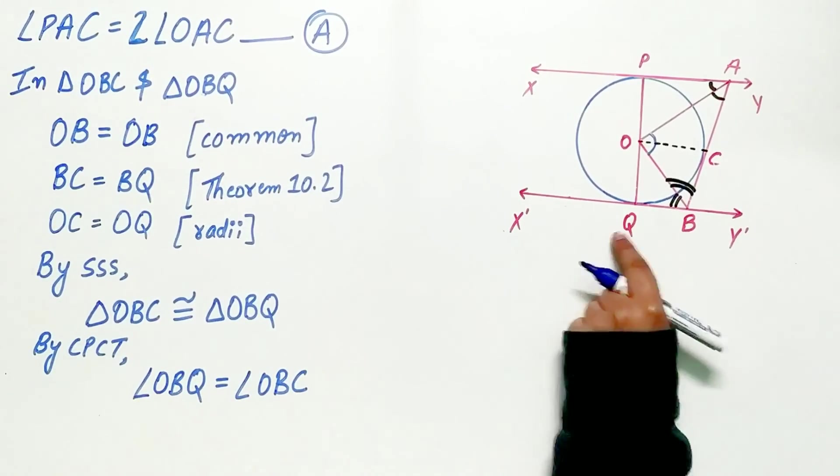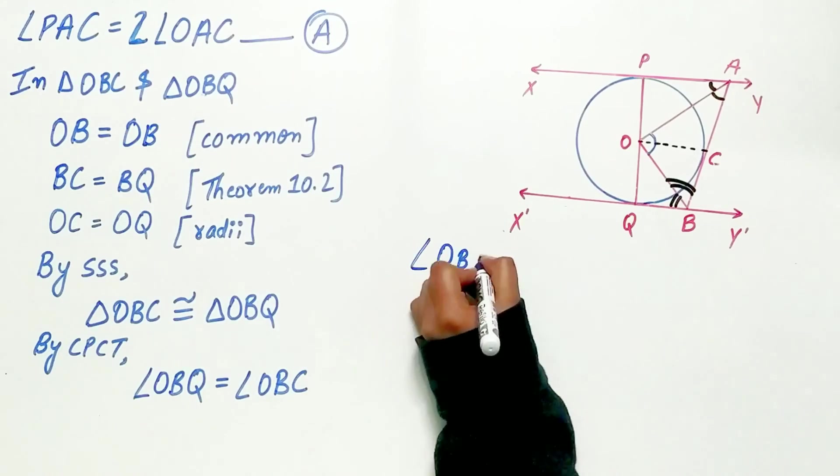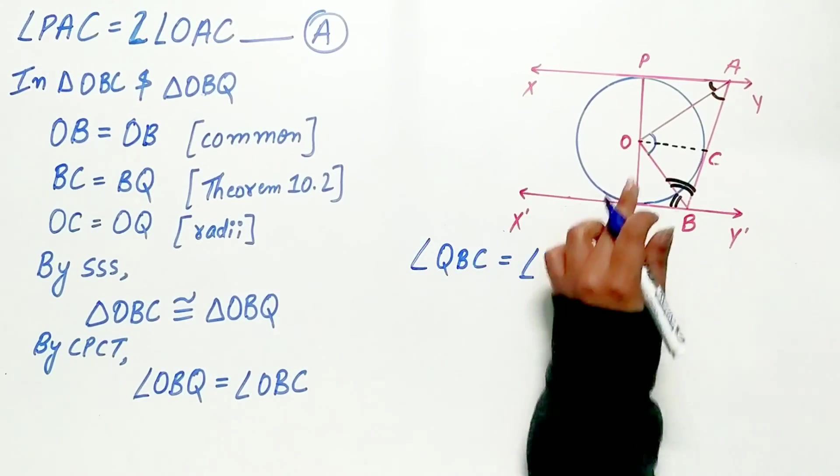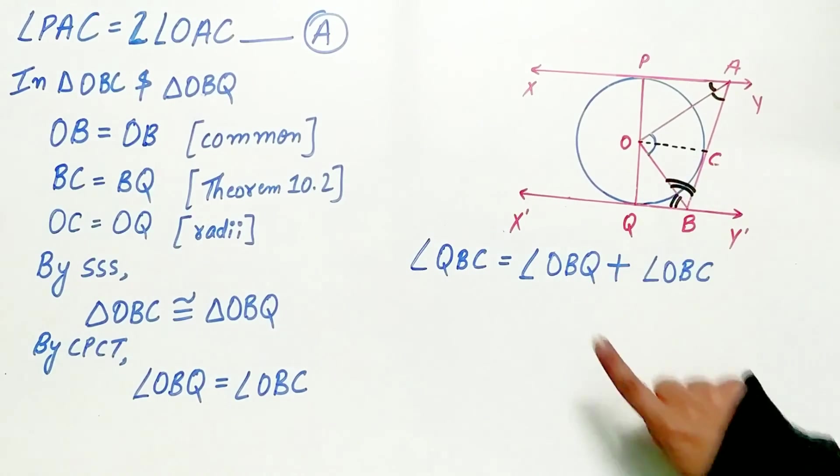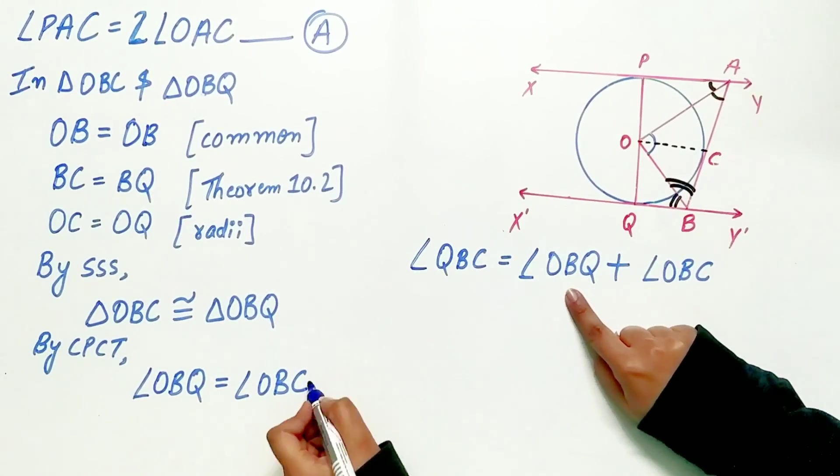Now angle QBC is equivalent to angle OBQ plus angle OBC.